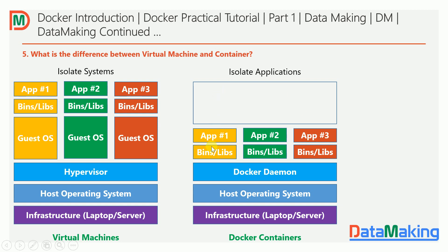With containers you benefit from better use of available resources because you are using only one operating system. Comparing the two architectures: the VM side has three or four operating systems consuming huge resources, whereas with containers this is minimized to one operating system — freeing extra resources for your applications so they run faster. The Docker Daemon is the Docker Engine which runs your Docker images, and the running Docker image is called a container. With containers you isolate the applications rather than the entire systems.